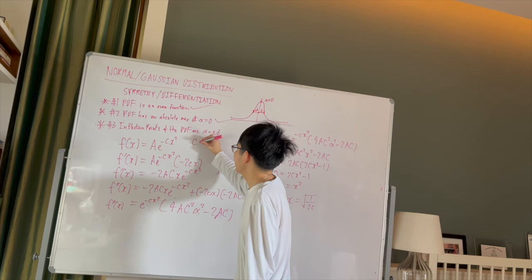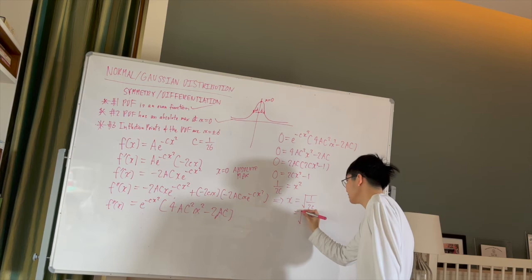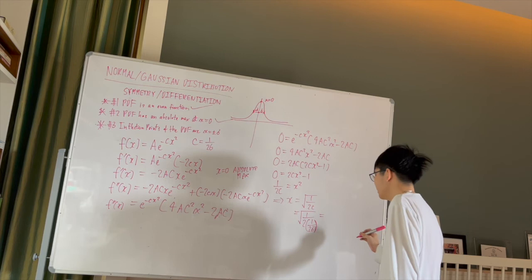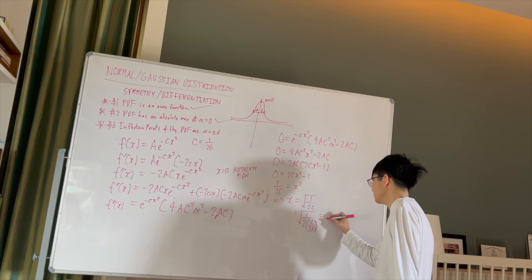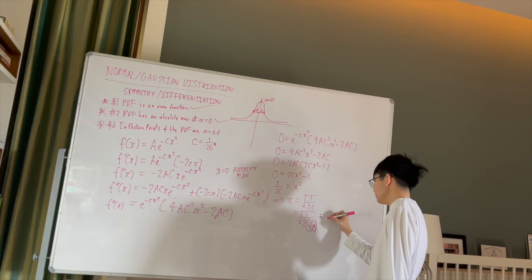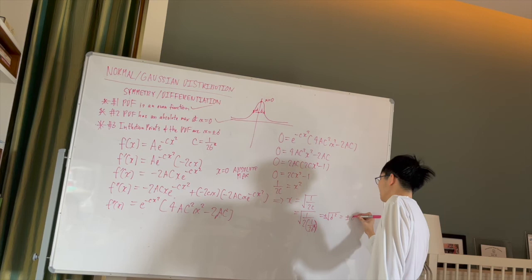And remember, I set that over here, that we define the C to be equal to 1 over 2 sigma squared. So if we plug that right into here, we will get square root of 1 over 2 times 1 over 2 sigma squared. And that becomes, well that's 1 over 1 over sigma squared. Oh sorry, sigma squared. That becomes square root of sigma squared. And remember when you're taking the square root, there's always a plus or minus. So that just becomes plus or minus sigma, which was what was to be proven.